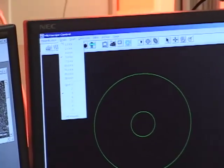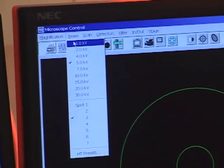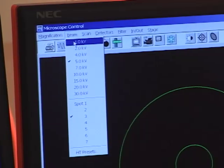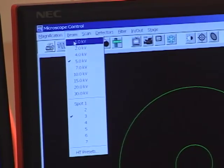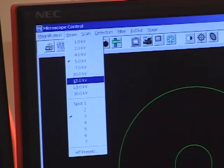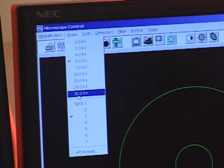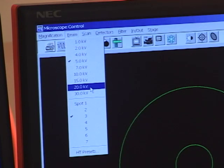The first menu here is accelerating voltage, which can go anywhere from 0.5 keV to 30 keV. Lower accelerating voltages are good for fragile samples like biological samples. Higher accelerating voltages give you better resolution. So any sample that conducts well enough to tolerate the high accelerating voltage, 30 keV or 20 keV, you want to use that because it will give you a better image in the end.